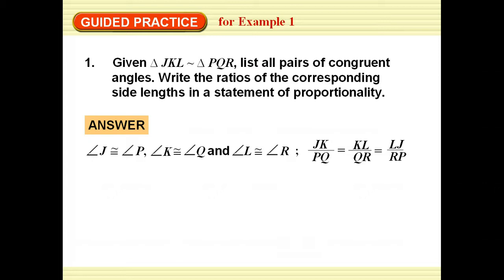And then JK corresponds to PQ. So JK is to PQ as KL is to QR as LJ is to RP.